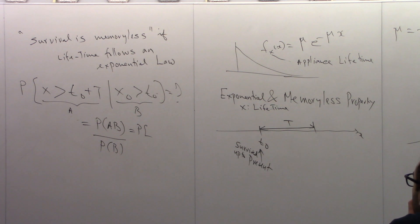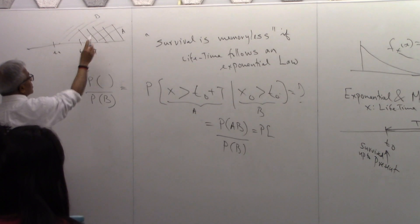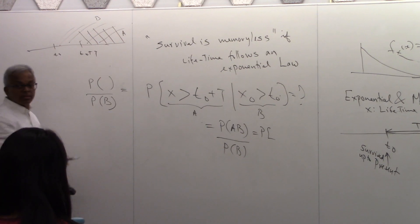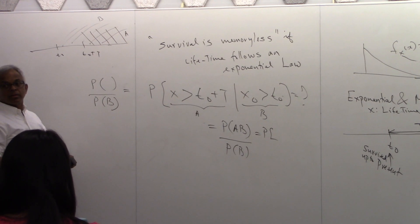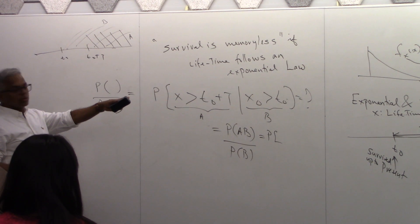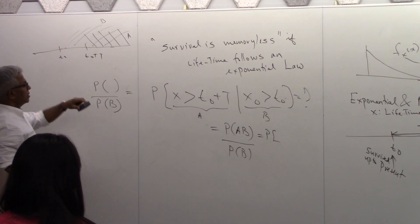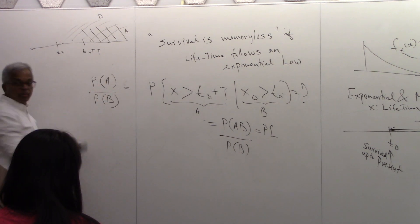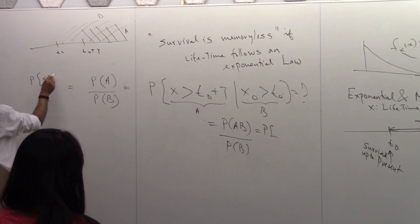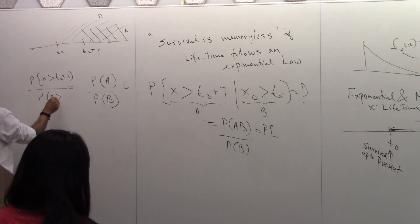Look at the picture. X is greater than t naught plus t. That is A. So this is the same as probability of x greater than t naught plus t, divided by probability of x greater than t naught.